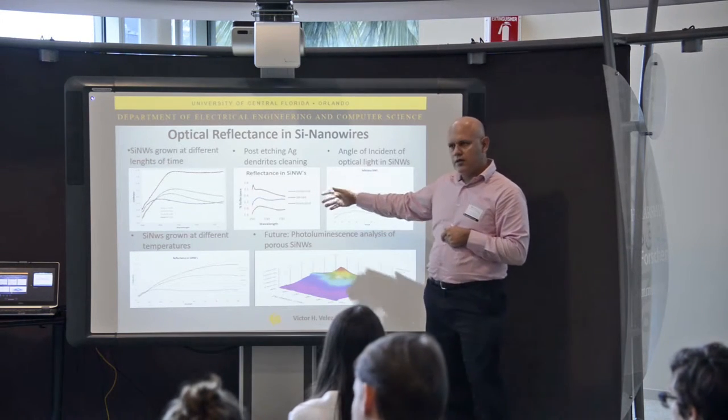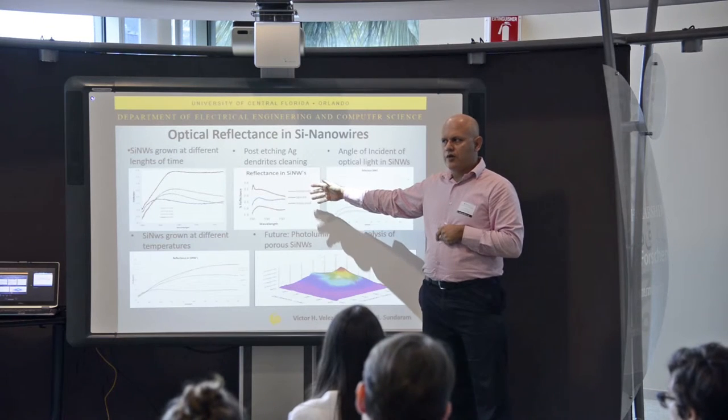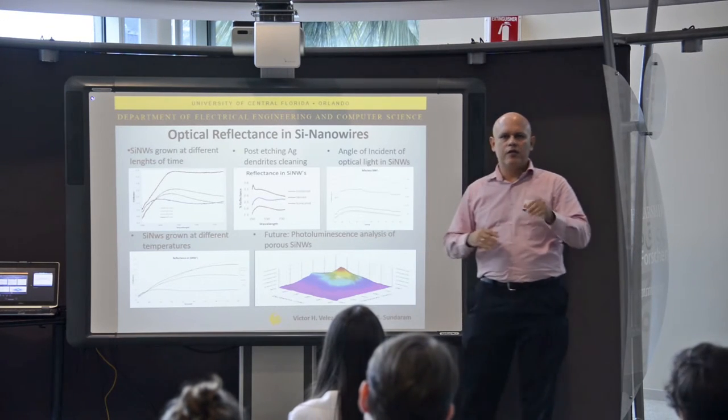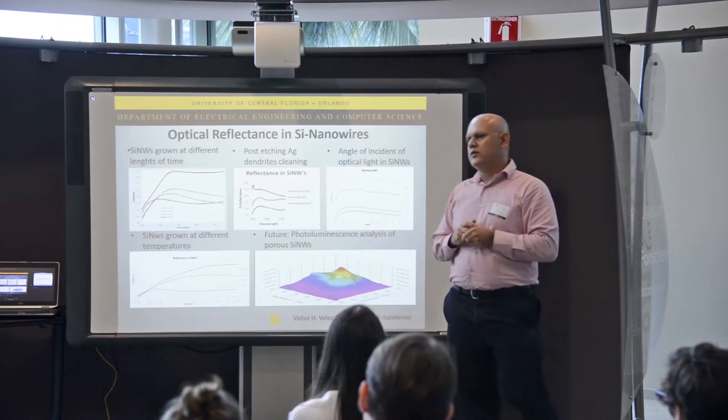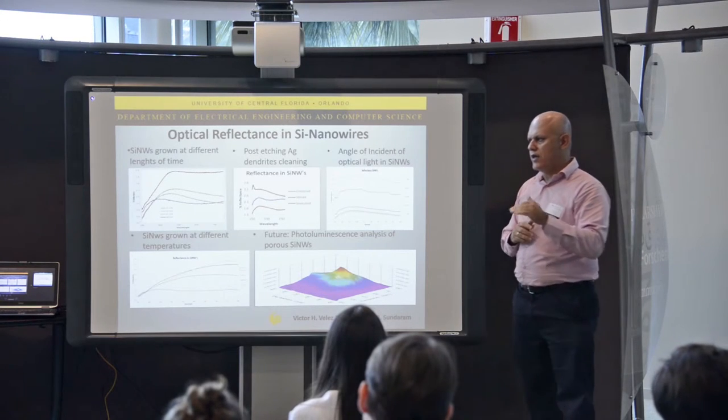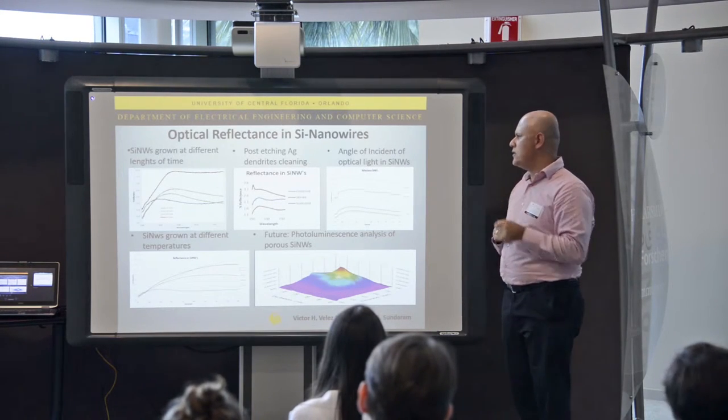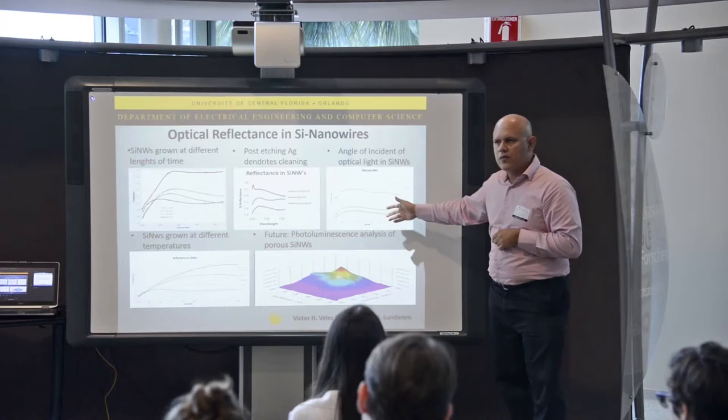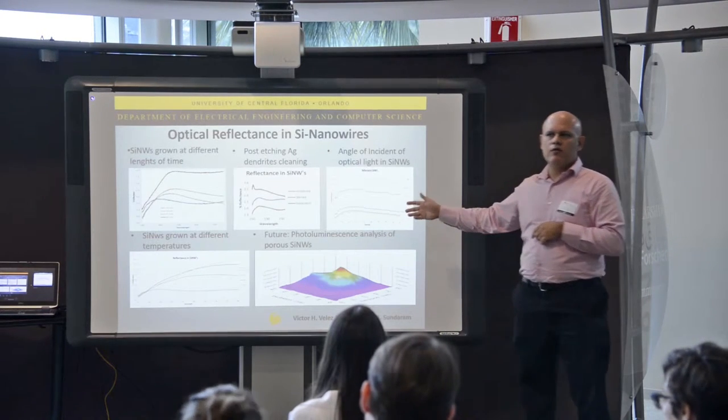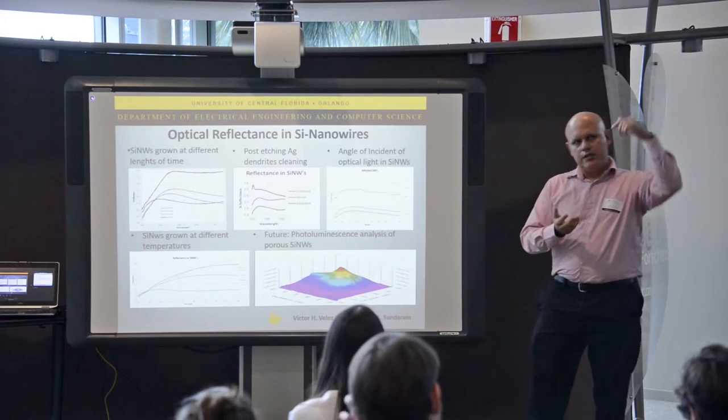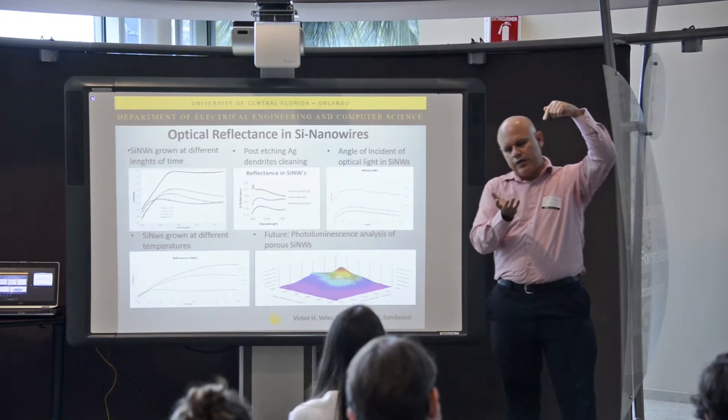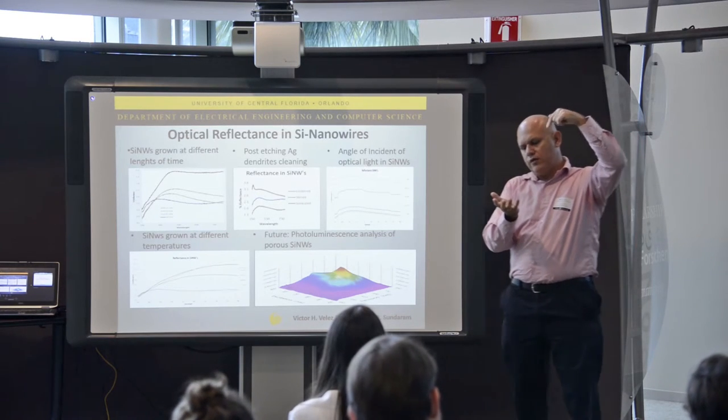We decided to clean the dendrites, which is the residual silver nitrate you get at the end of the fabrication of these nanowires. Then we observed the angle of incidence, which is the angle of the solar light on the solar cell.